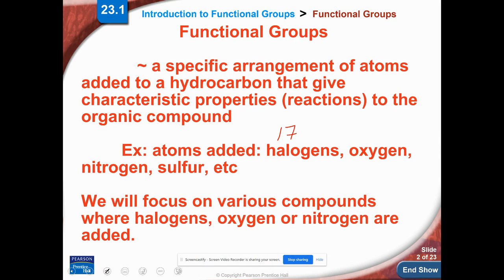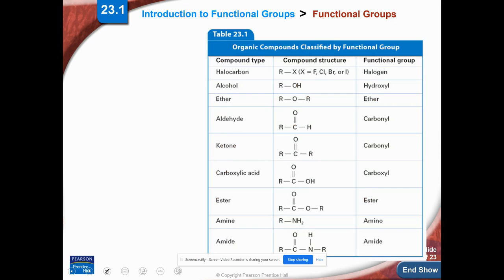So we will focus on various compounds where there's halogens, oxygen, or nitrogen. We're not going to talk about sulfur compounds, and there's a whole branch of organic chemistry where we include metals, which is called organometallic, and we're not going to talk about those either. So we're just going to basically focus on halogens and oxygen. Oxygen is going to be our big one. So here we have a table. This is going to be a little bit similar to table R, but this is not exactly table R. And we have organic compounds, and we're going to classify them by their functional group.